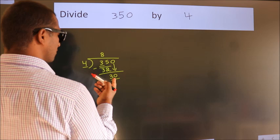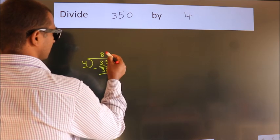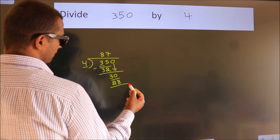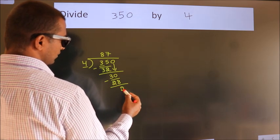A number close to 30 in 4 table is 4, 7, 28. Now we subtract. We get 2.